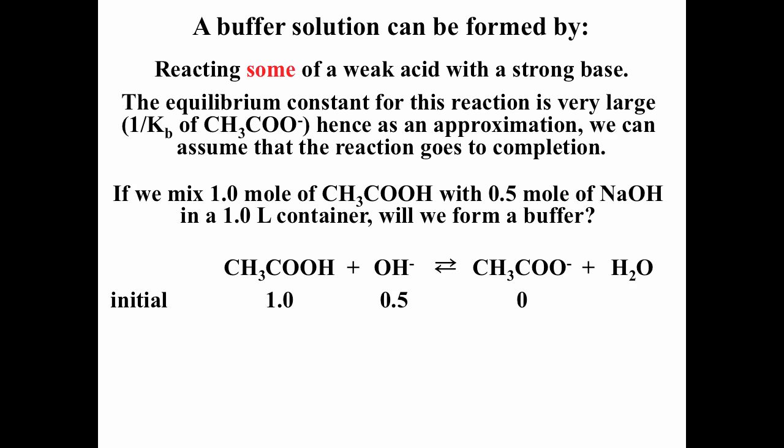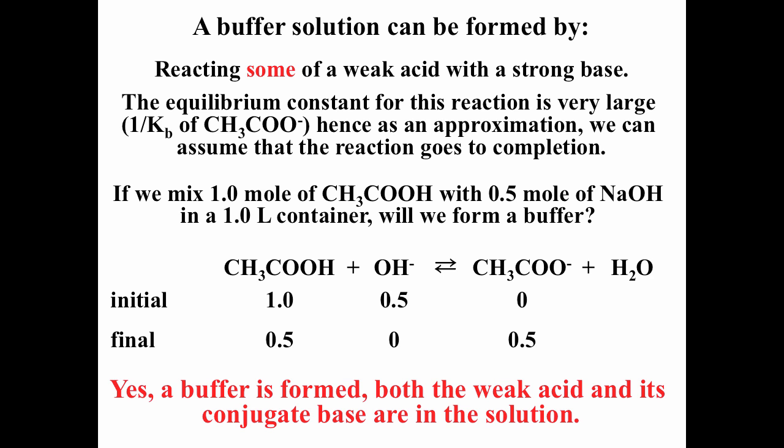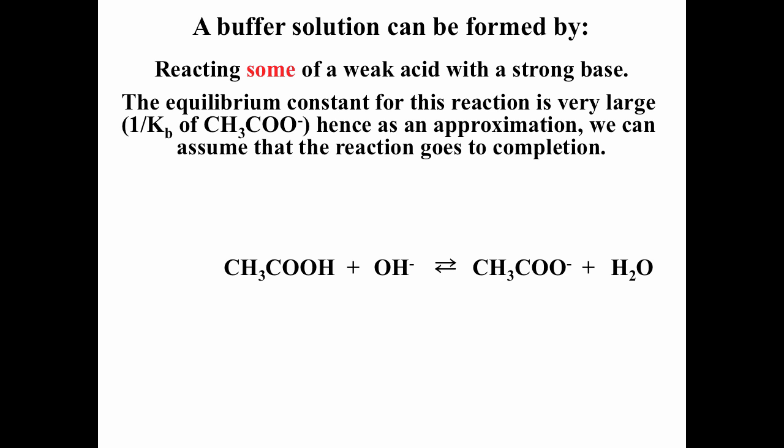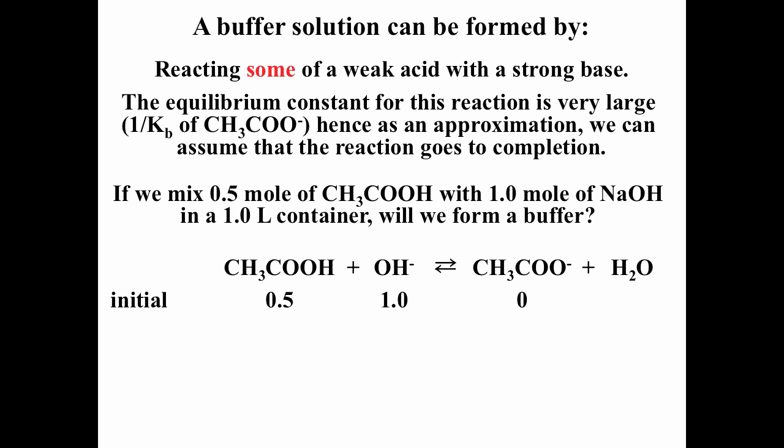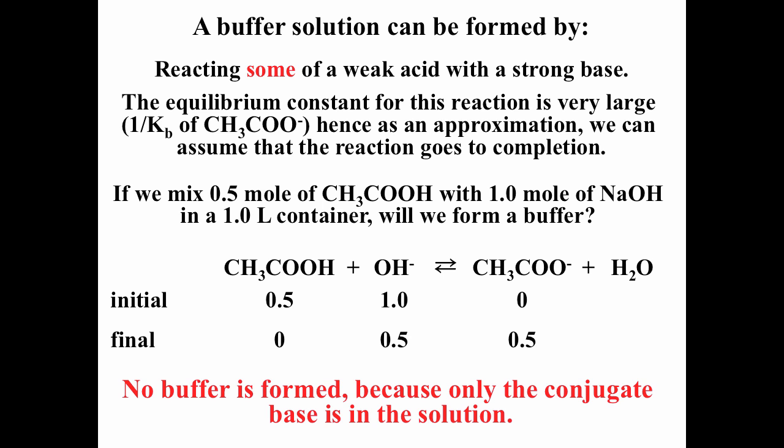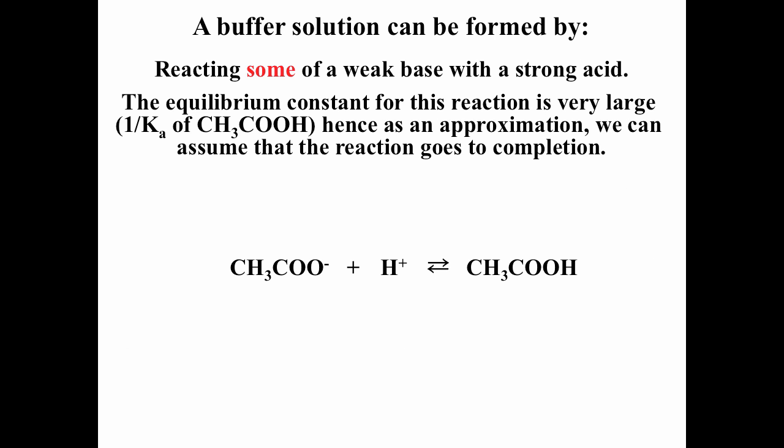If we have one mole of acetic acid and only 0.5 moles of hydroxide, the hydroxide is the limiting reagent. We end up with 0.5 moles of acetic acid and 0.5 moles of acetate ion — that gives us a buffer solution. You don't need equal amounts of weak acid and conjugate base; you just need some of both. Conversely, if we start with 0.5 moles of acetic acid and one mole of hydroxide, the acetic acid is consumed first and we do not form a buffer. To summarize the three ways: weak acid plus salt of conjugate base; react some weak acid with strong base; react some conjugate base with strong acid.